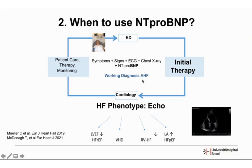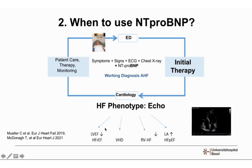With the working diagnosis of acute heart failure, you initiate therapy — most often diuretic therapy. Especially for the first episode of acute decompensation, you must consult a cardiologist for echocardiography, which is central to characterizing the phenotype: heart failure with reduced ejection fraction, valvular heart disease, isolated right heart failure, or heart failure with preserved ejection fraction. All these etiologies lead to elevated NT-proBNP but require different therapeutic approaches.